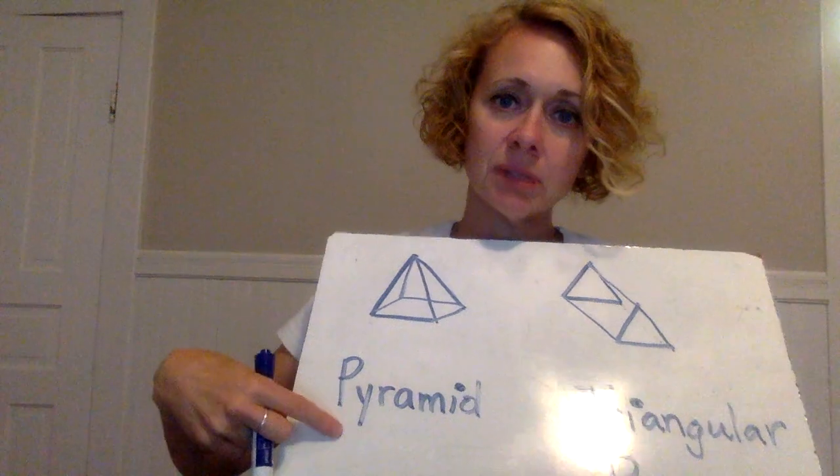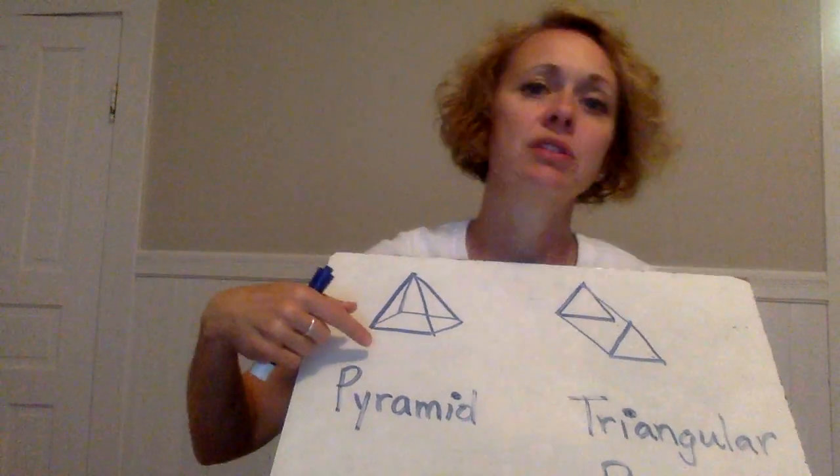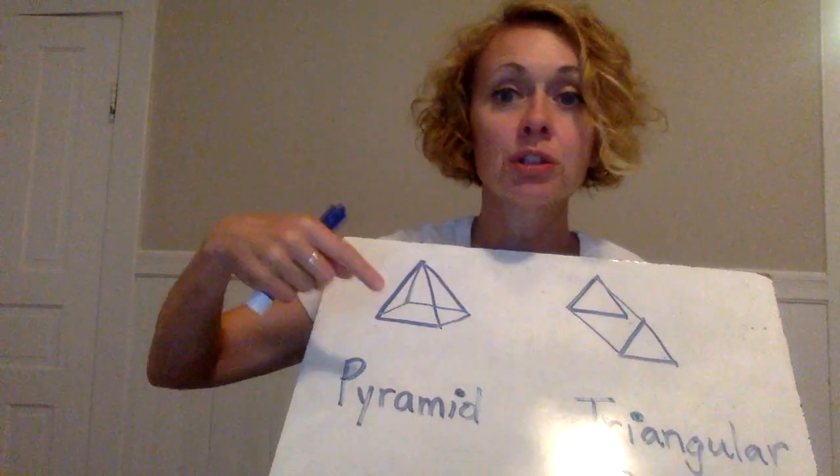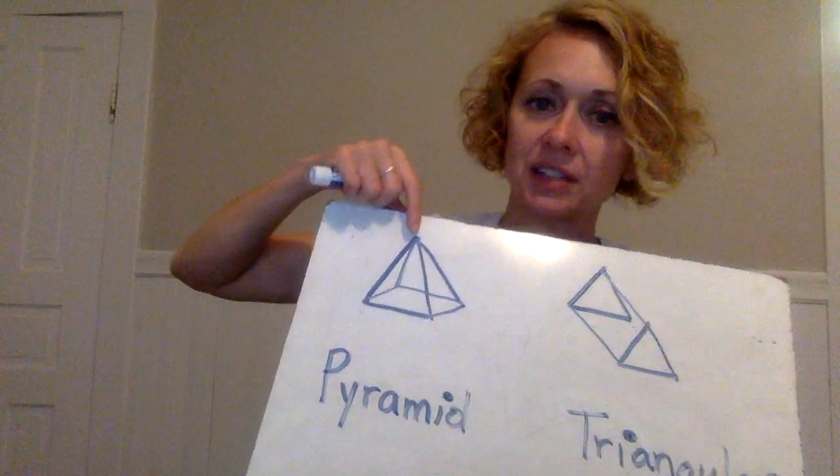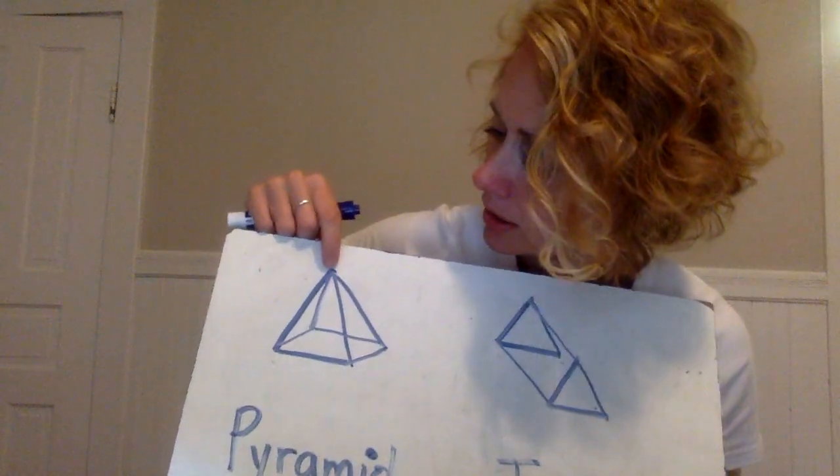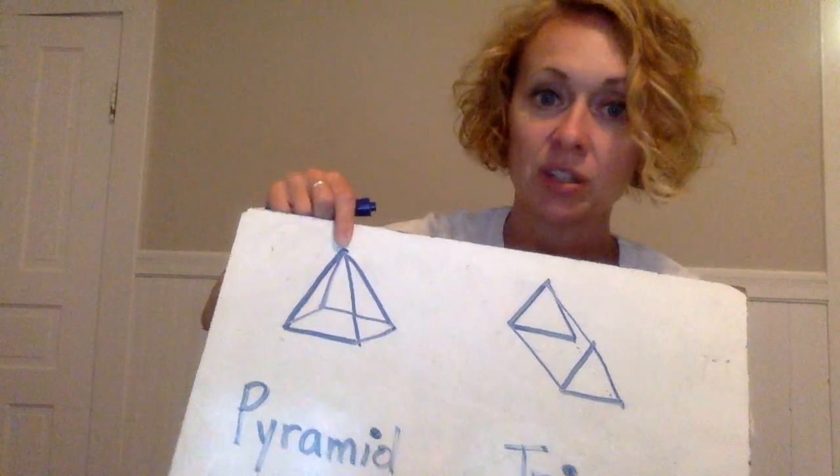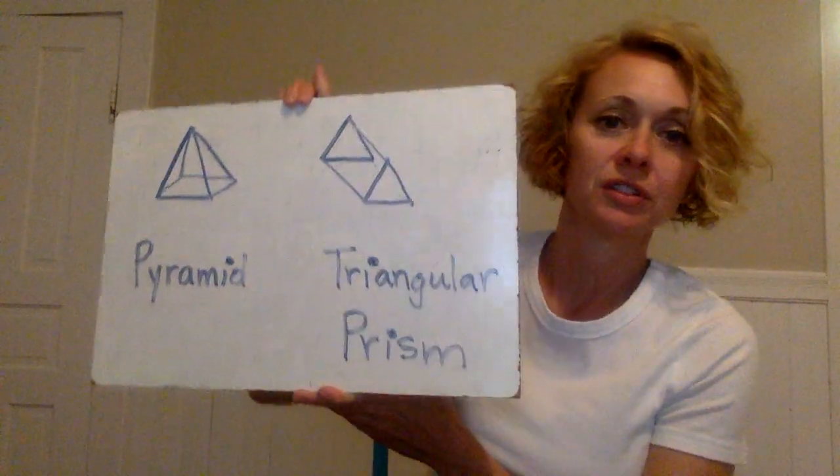You know a pyramid can have either a rectangle, a square, or a triangle as its base but it has triangular faces that touch up in the top of the shape which is called a vertex. So that's the difference.